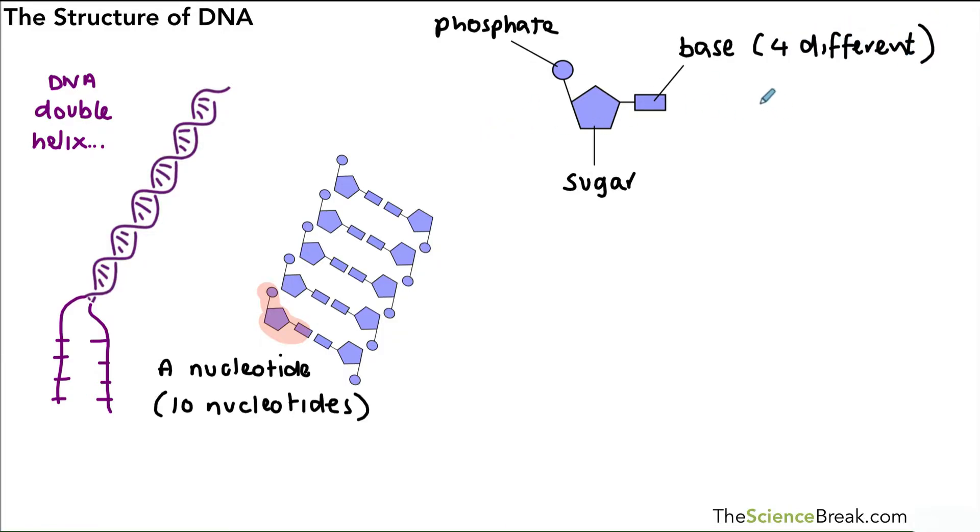So the nucleotide is made up of three parts: a phosphate, the sugar, and the base. And there are four different bases that you need to know about. Those are thymine, adenine, cytosine, and guanine. I'm going to write out the full names. You don't need to remember the full name, but just in case you come across them.